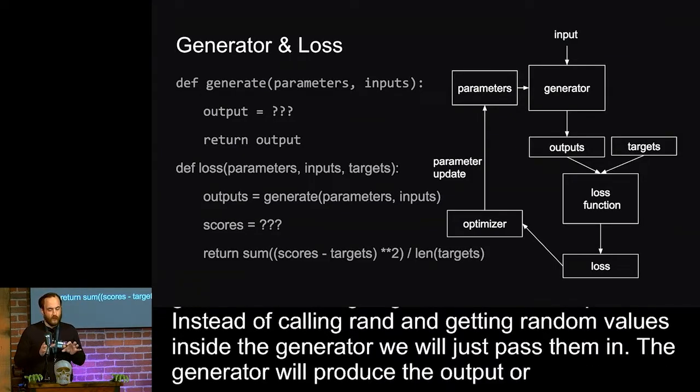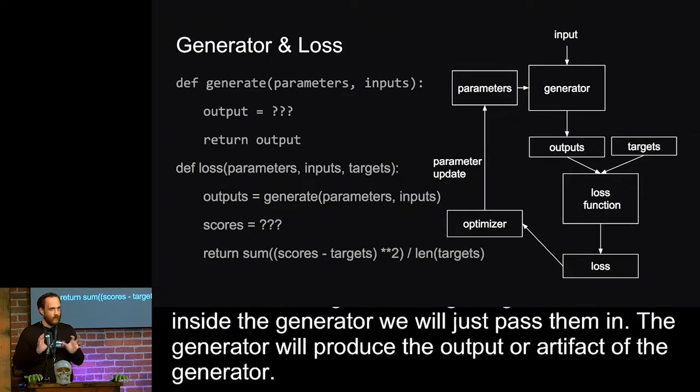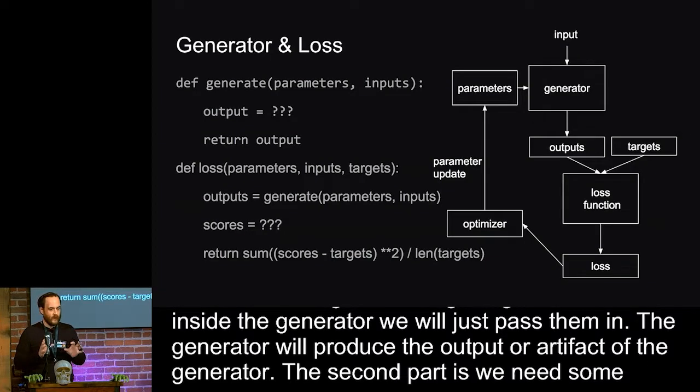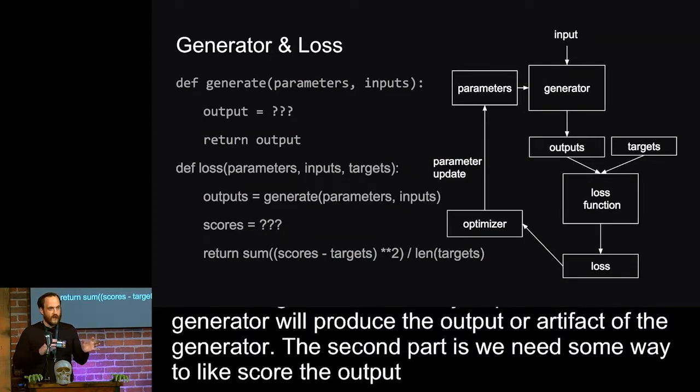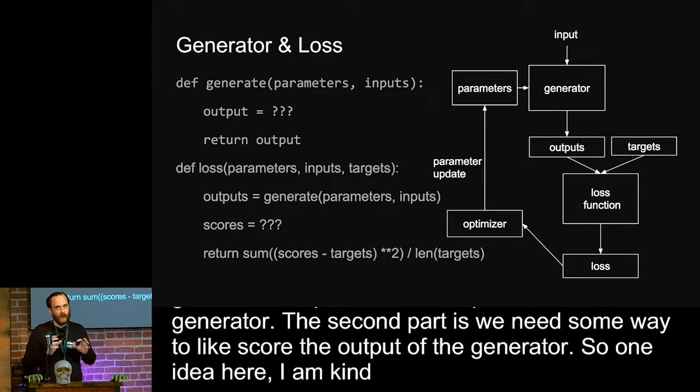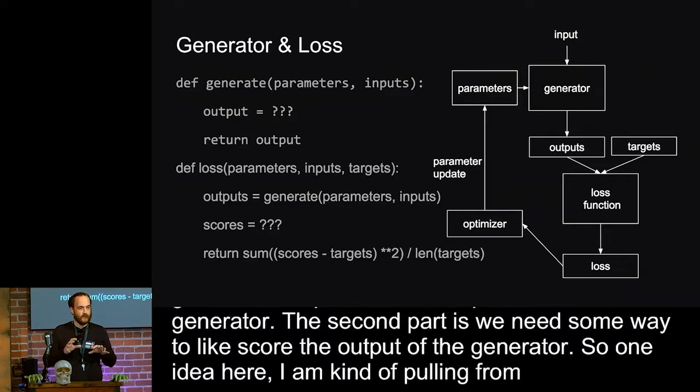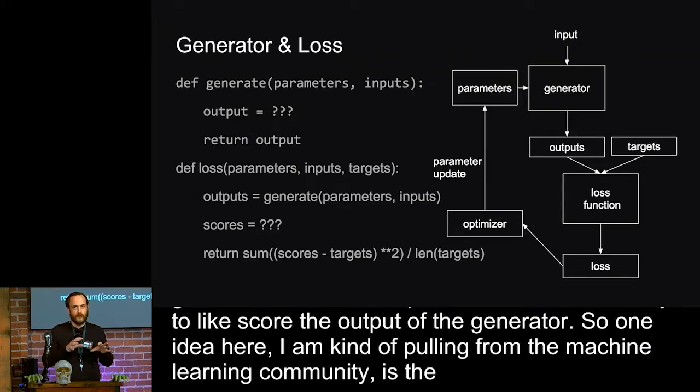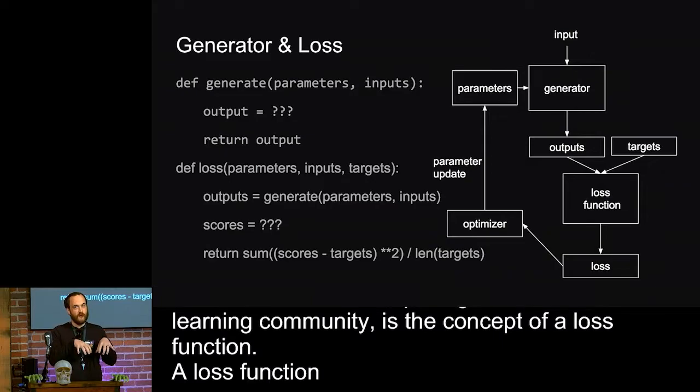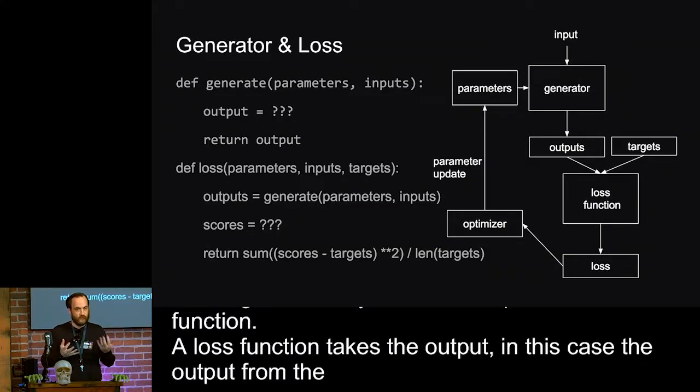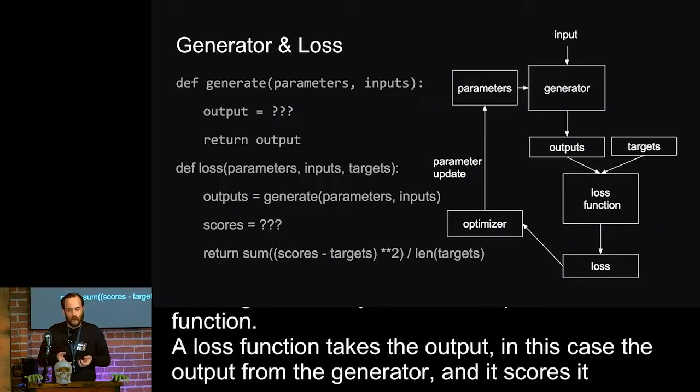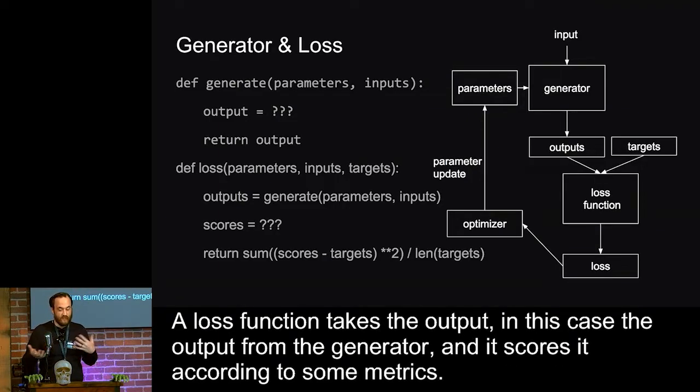The second part is we need some way to score the output of the generator. And so one idea here I'm pulling from the machine learning community is the concept of a loss function. And so a loss function takes the output, in this case the output from the generator, and it scores it according to some metrics. It depends on your goals.